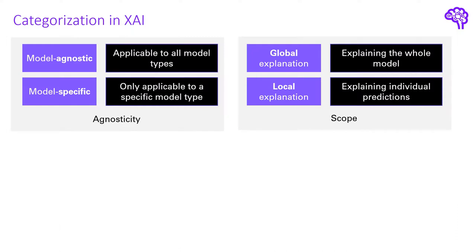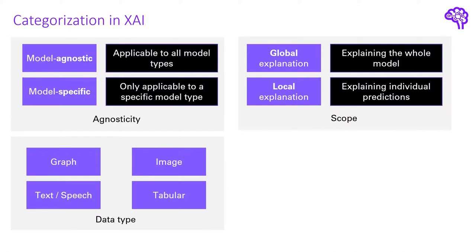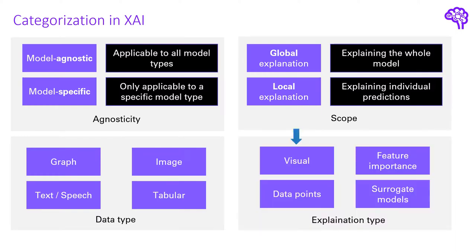Besides agnosticity and the scope of a method, we can further differentiate according to the data type a method can handle. Not all explainability algorithms can work with all data types. Finally, the models produce different sorts of explanations — starting with correlation plots or other visual methods, we can also obtain information about feature importance, sometimes also called feature summary. Other methods return data points that help us better understand the model. Finally there exist also approaches that build a simple model around a complex one; that simple model can then be used to derive explanations. These models are usually called surrogates.